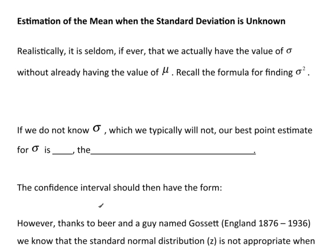Okay, so what do we do? We want to estimate the mean with a confidence interval, but we don't know the standard deviation. In other words, we don't know sigma, because in reality it's extremely rare that we actually know the value of sigma without already having the value of mu. Remember, we're trying to estimate mu, so if we already have mu, then why are we trying to estimate it?